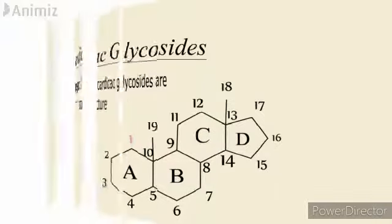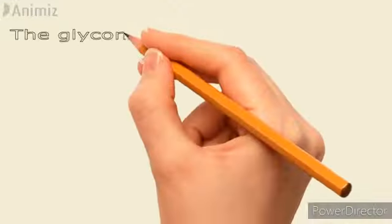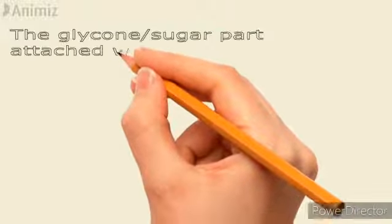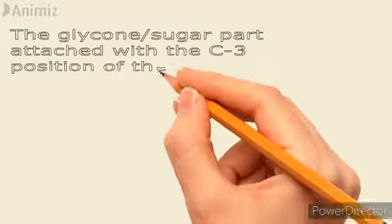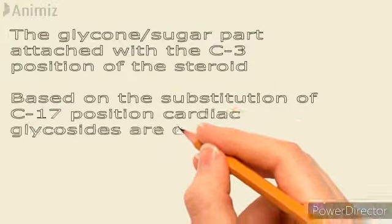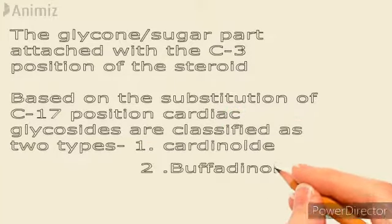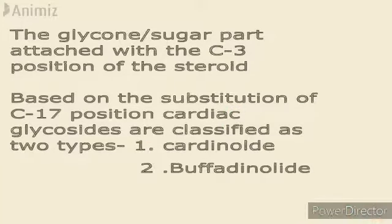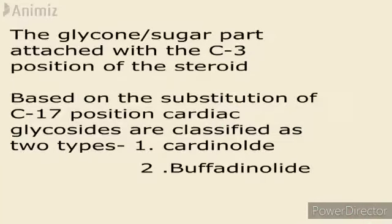Glycosides have two parts: the glycone and the aglycone. In the case of cardiac glycosides, the aglycone part is steroidal in nature, and the glycone part, or sugar part, is attached at the C3 position of the steroid ring. Based on the structure of the substitution at the C17 position, cardiac glycosides are classified into two types.